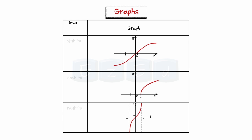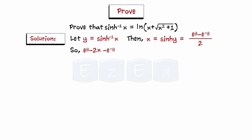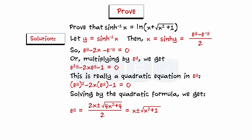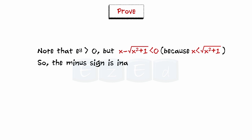Let us look at the graphs of the inverse hyperbolic functions and prove the relation for sinh⁻¹x. Starting with y = sinh⁻¹x, we have x = sinh y = (e^y − e^(−y)) / 2, so e^y − 2x − e^(−y) = 0. Multiplying by e^y gives e^(2y) − 2x·e^y − 1 = 0, a quadratic in e^y. Solving by the quadratic formula: e^y = x ± √(x² + 1). Since e^y > 0 and x − √(x² + 1) < 0, the minus sign is inadmissible, so e^y = x + √(x² + 1).